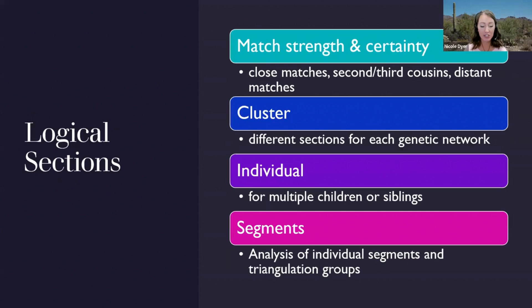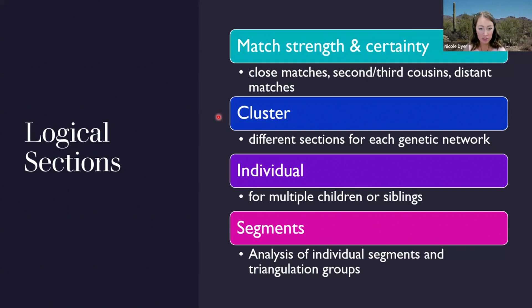Some different ideas for logical sections within a DNA research report: First, you could discuss matches in order of their match strength and certainty — starting with close matches, then moving back to more distant cousins with common ancestors further up the tree, and then going on to distant matches. Another idea is to organize the report by cluster. Maybe you've done a cluster analysis and have three unidentified clusters that seem relevant to your project, and you can discuss each cluster in a different section.